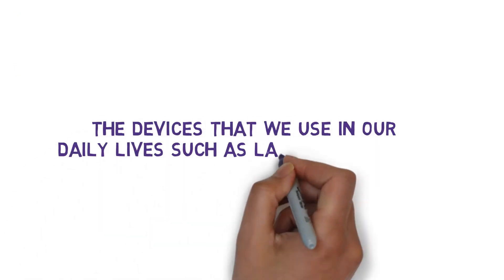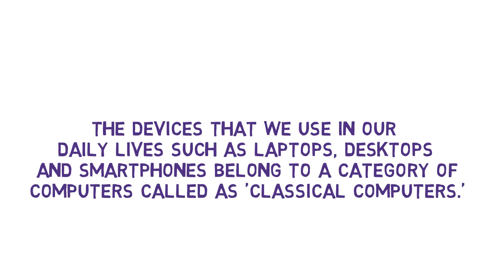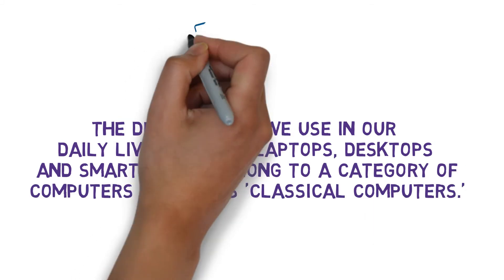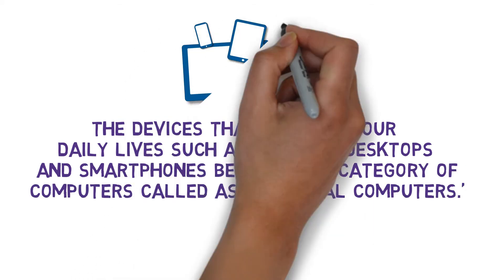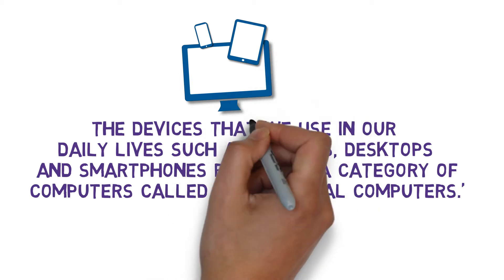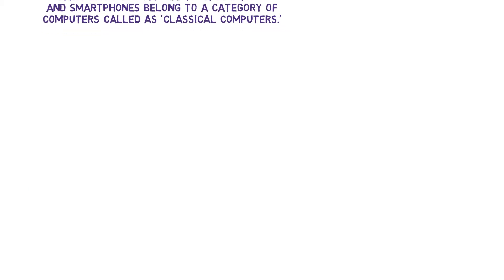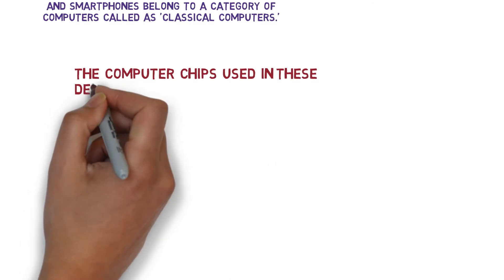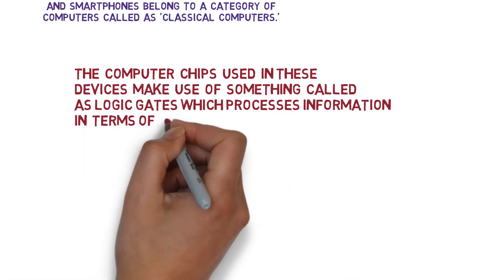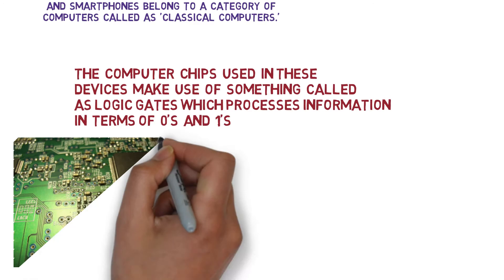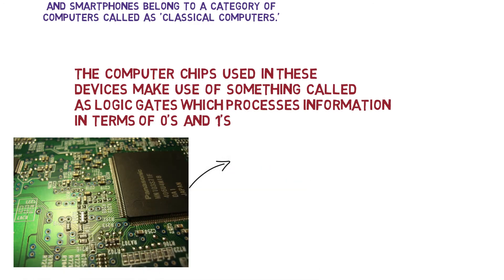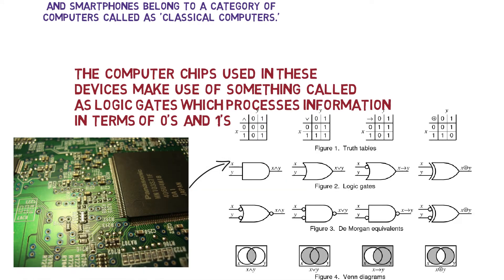The devices that we use in our daily lives such as laptops, desktops and smartphones belong to a category of computers called classical computers. The computer chips used in these devices make use of logic gates which process information in terms of zeros and ones.